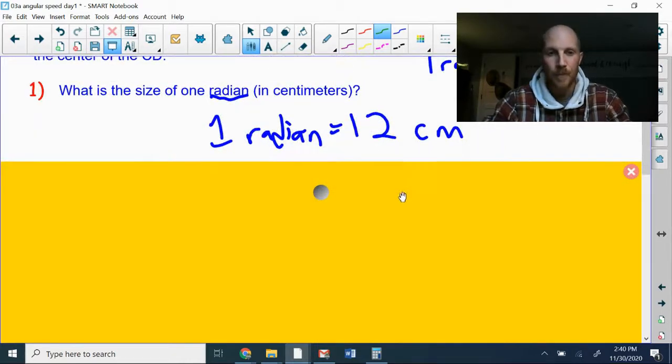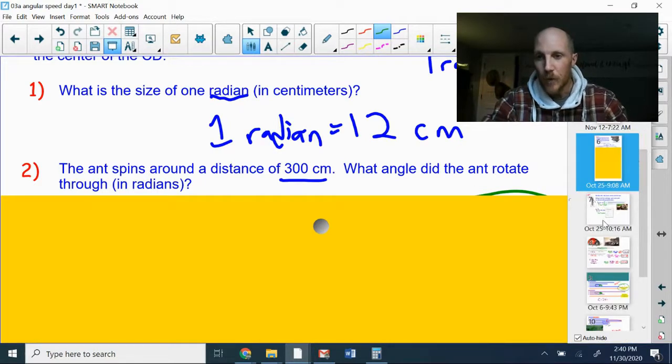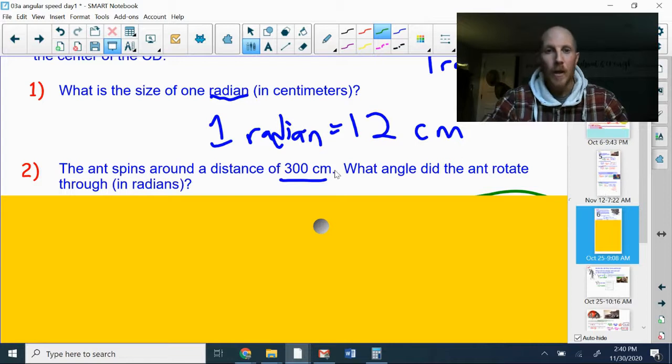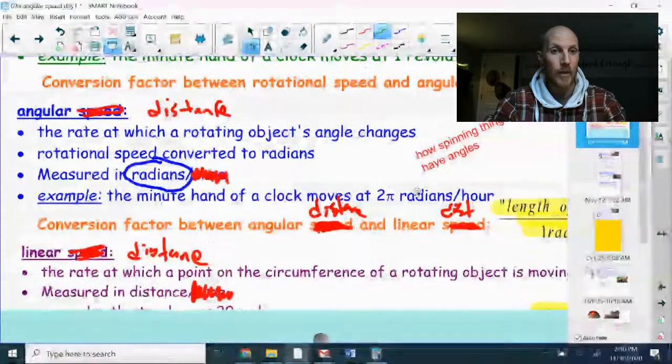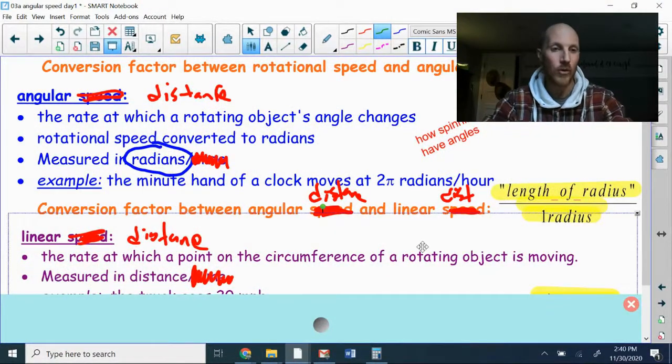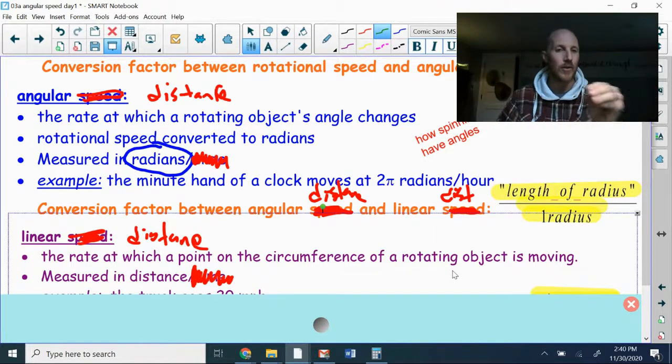Second question: the ant spins around a total distance of 300 centimeters around the outside edge of that circle. We want to know what angle did the ant rotate through, measured in radians? All right, so to our notes page. Our notes are described in terms of speeds, but all of these concepts—rotational speed, angular speed, linear speed—those concepts really are not defined just as a speed. We can also use them to talk about distances.